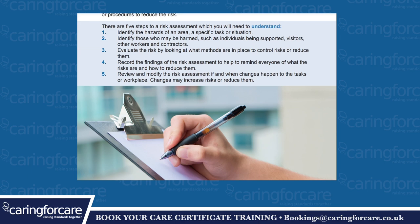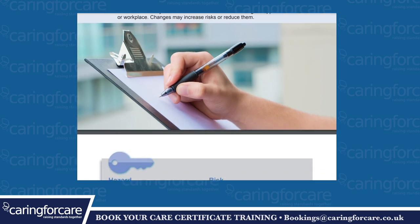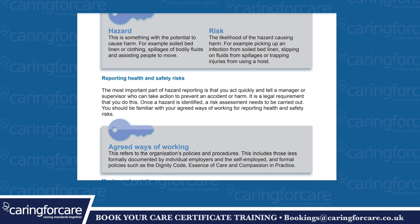There are five steps to a risk assessment. First, identify the hazards of an area, a specific task or situation. Second, identify those who may be harmed, such as individuals being supported, visitors or other workers and contractors. Third, evaluate the risks by looking at what methods are in place to control or reduce them. Fourth, record the findings of the risk assessment to help remind everyone of what the risks are and how to reduce them. Fifth, review and modify the risk assessment if and when changes happen to the tasks or workplace. A hazard is something with the potential to cause harm — for example, soiled bed linen, spillages of bodily fluids and assisting people to move. Risk is the likelihood of causing harm — for example, picking up an infection from soiled bed linen, slipping on spillages, or trapping injuries from using a hoist.